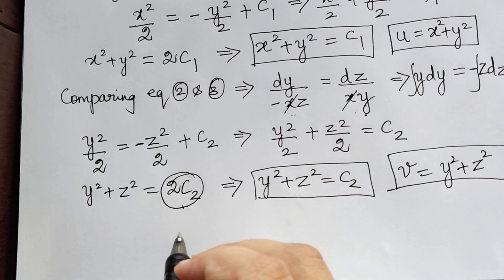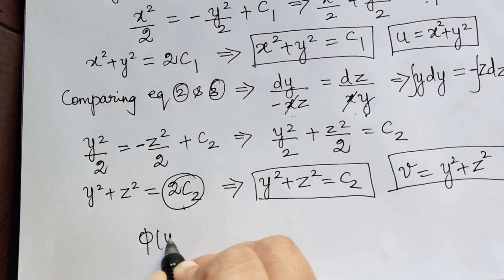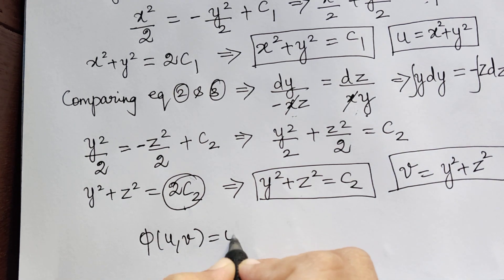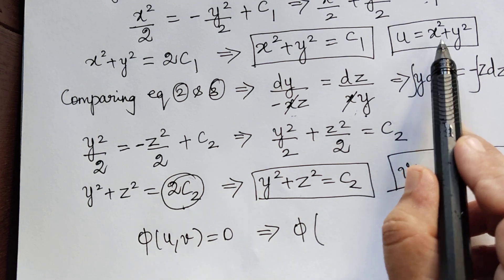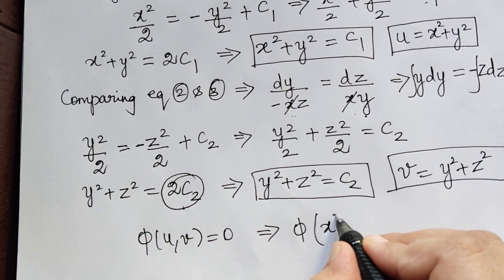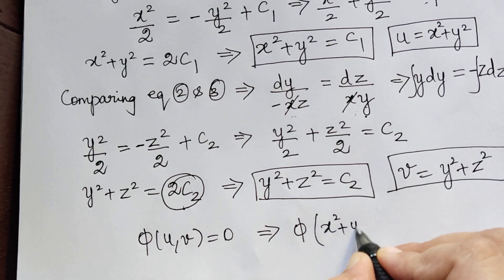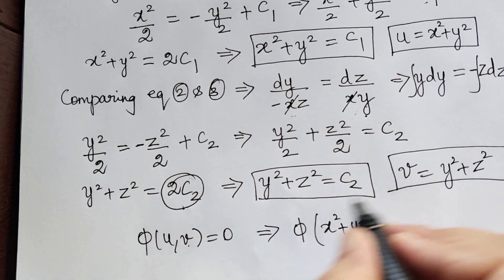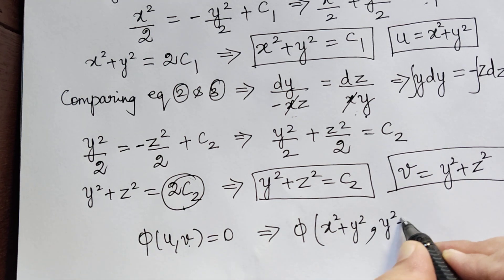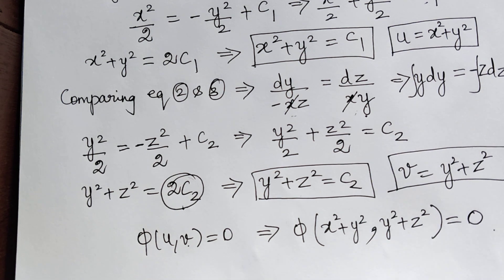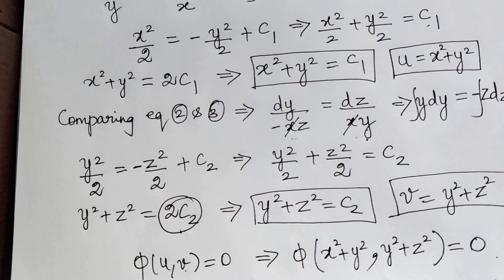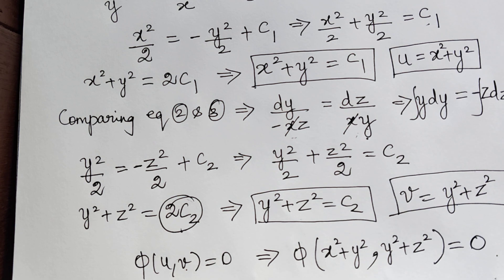Now we write the general solution: phi of u comma v equals 0. So the general solution is phi of (x squared plus y squared, y squared plus z squared) equals 0. Hope you have understood this problem. We will get back with another problem in our next video. Thank you.